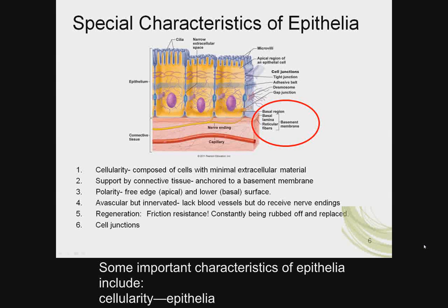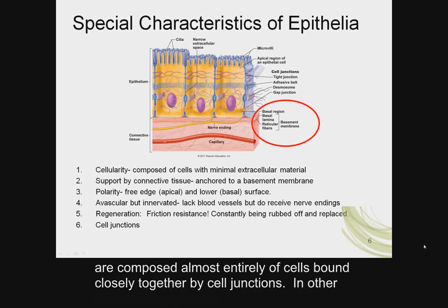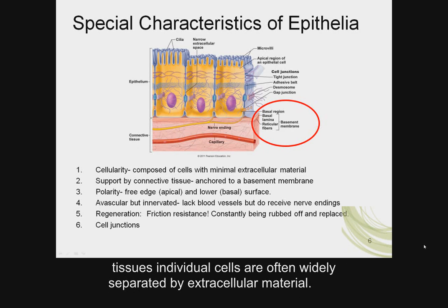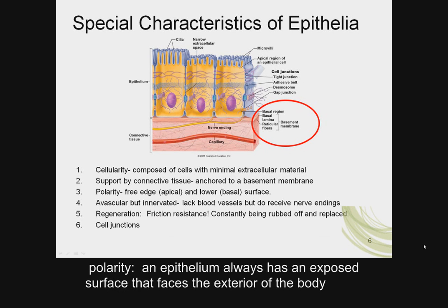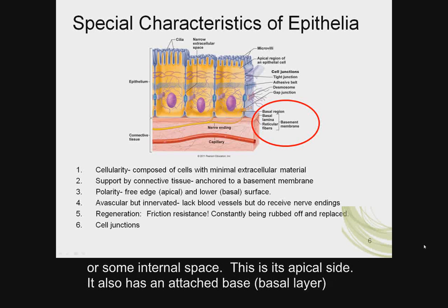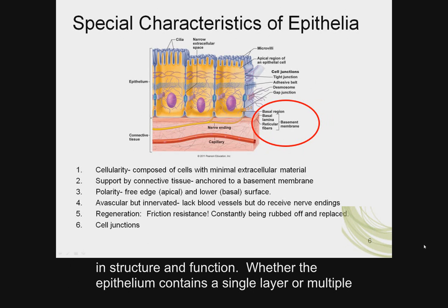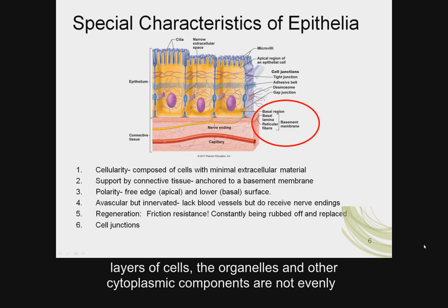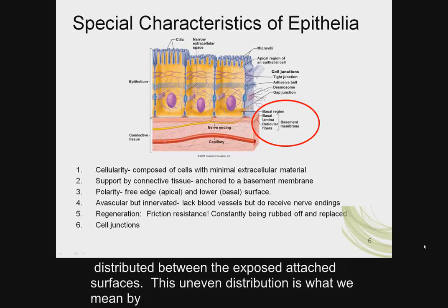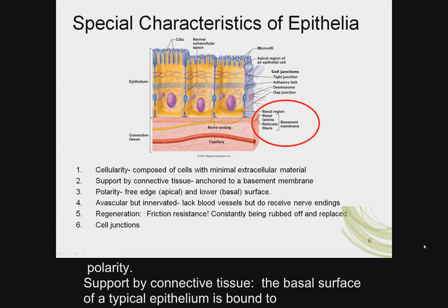Some important characteristics of epithelia include: 1. Cellularity — epithelia are composed almost entirely of cells bound closely together by cell junctions; in other tissues, individual cells are often widely separated by extracellular material. 2. Polarity — an epithelium always has an exposed apical surface facing the exterior or some internal space, and an attached basal layer where the epithelium is attached to adjacent tissues. The apical and basal layers differ in structure and function, and organelles are not evenly distributed between surfaces — this uneven distribution is what we mean by polarity.